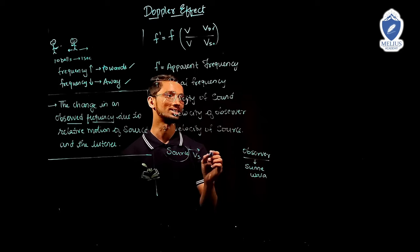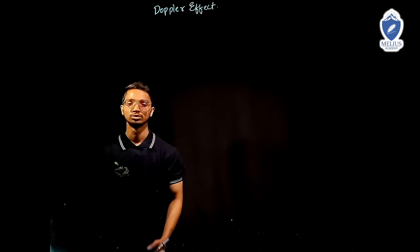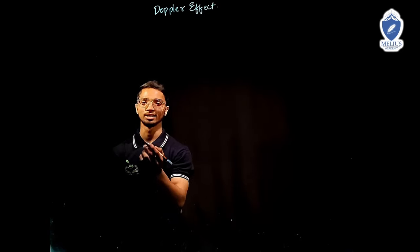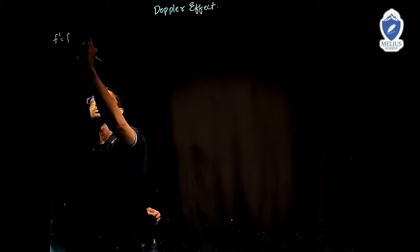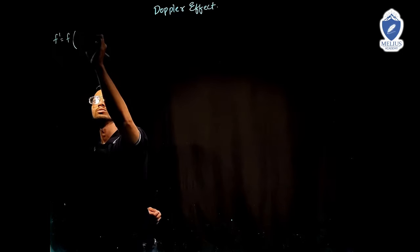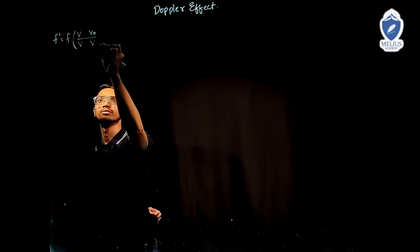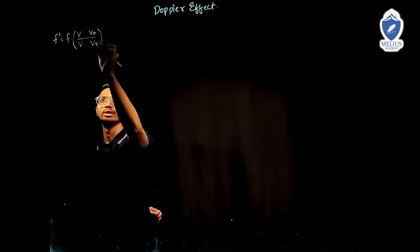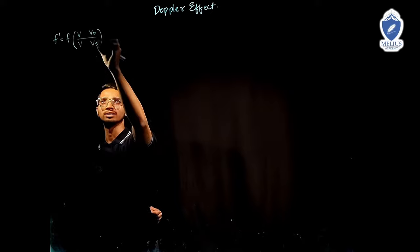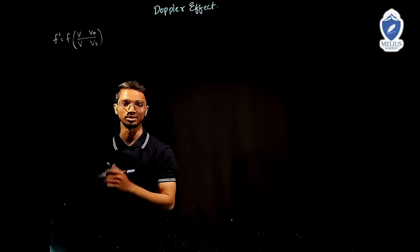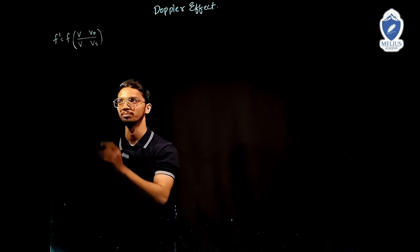We will learn it by some examples. Let us understand with an example. The formula is F' = F × (V ± V_O) / (V ± V_S). The sign conventions will be the problem in these questions.